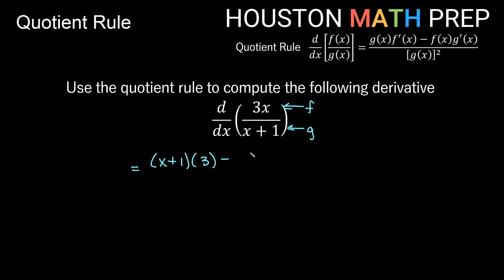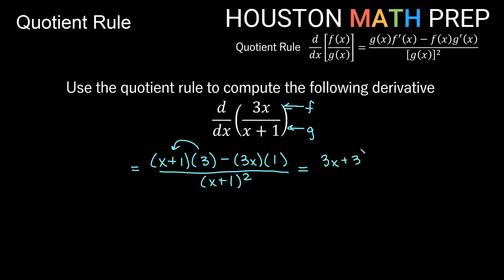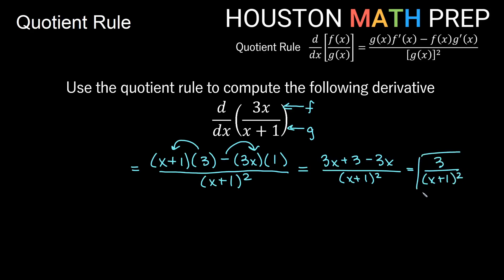Minus high d low — so f g prime — that's 3x times the derivative of the low function. The derivative of x plus 1: derivative of x to the 1 is just 1, derivative of the constant is 0, so g prime is 1. This is low d high minus high d low, or g f prime minus f g prime, all over the square of what lies below — the original denominator x plus 1, so x plus 1 all squared. Distributing the 3 gives 3x plus 3, then minus 3x times 1, so minus 3x, all over x plus 1 squared. The 3x terms cancel, leaving 3 over (x+1) squared.